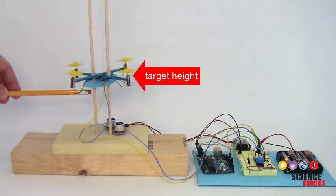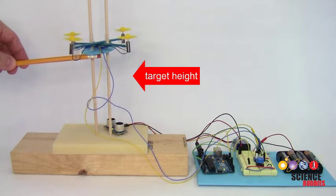If the actual height is too high, it decreases the speed of the motors, making the drone fly down.